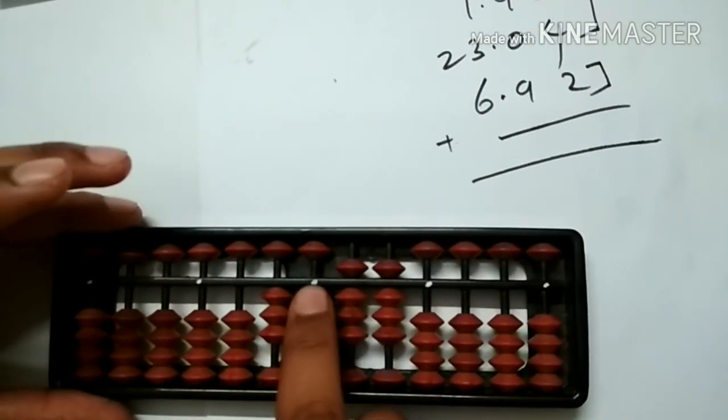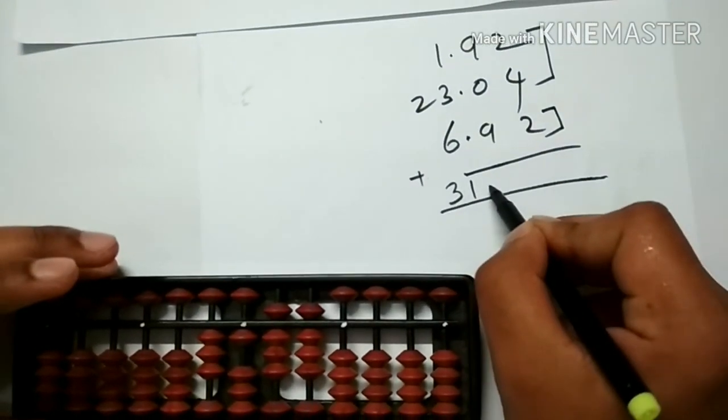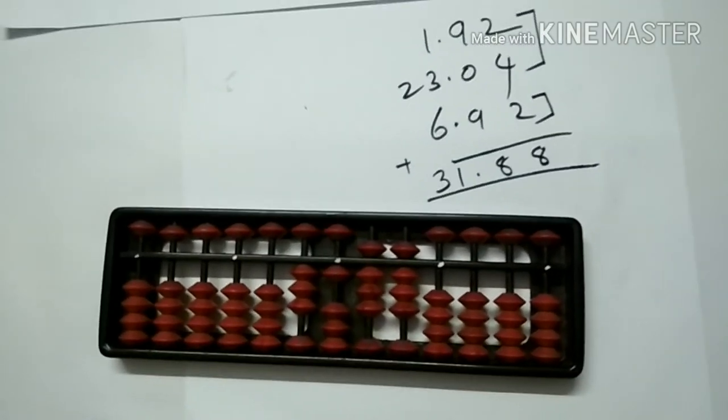Let us see the answer: 31.88. In this way decimal addition can be done on the abacus.